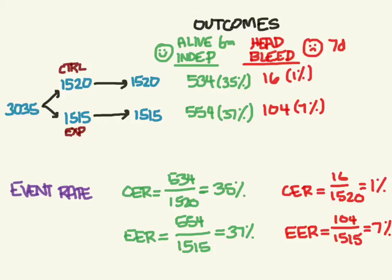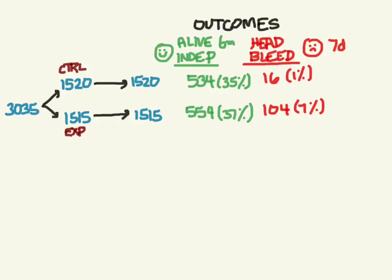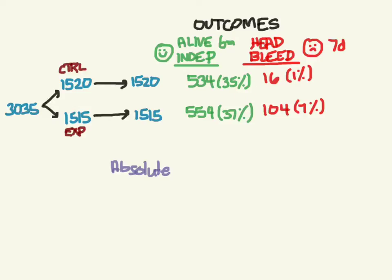I've moved those event rates into the table next to their corresponding numbers. Now let's look at absolute parameters — how much better or worse is one group compared to the other. For the benefit (green outcome), the absolute benefit increase is 37% minus 35% = 2%. The experimental group had a 2% greater rate of being alive and independent than the control group.